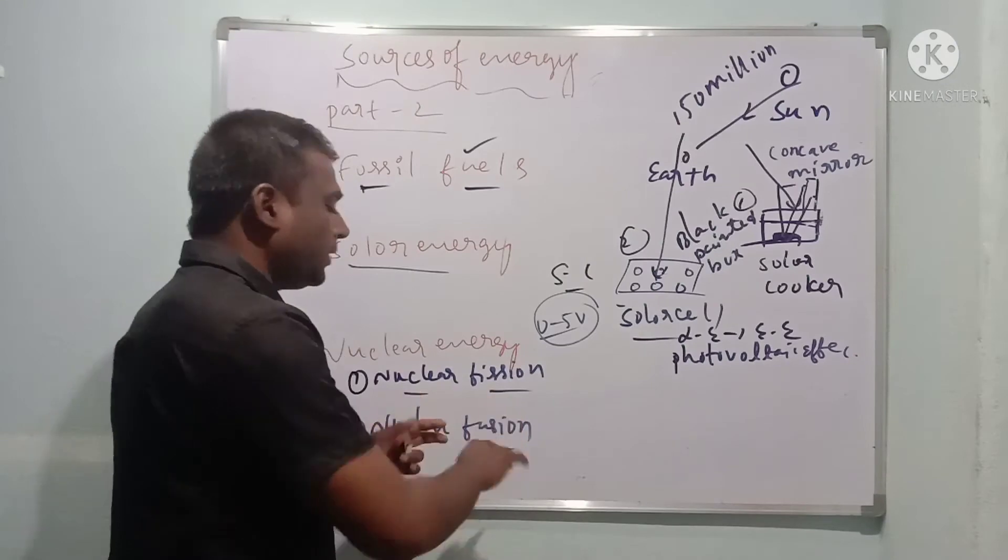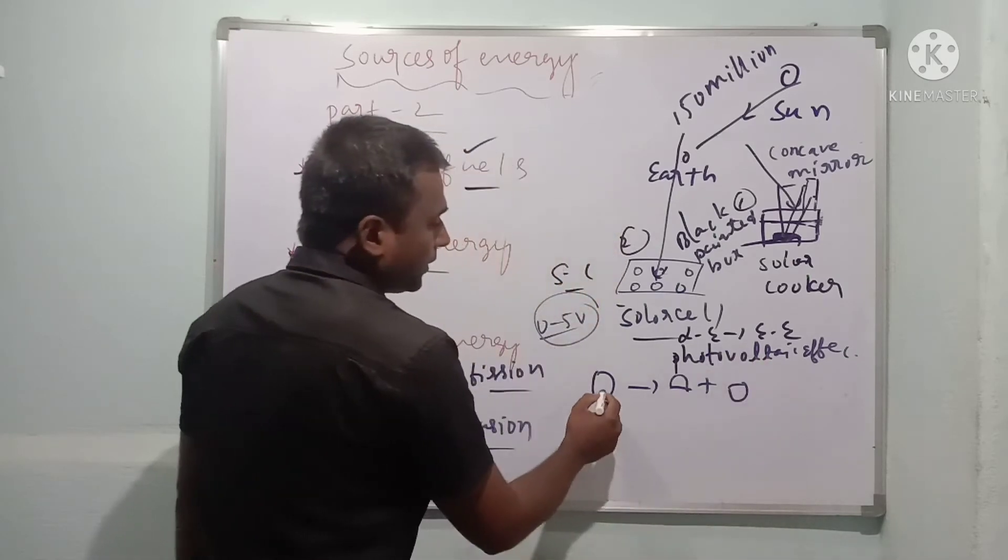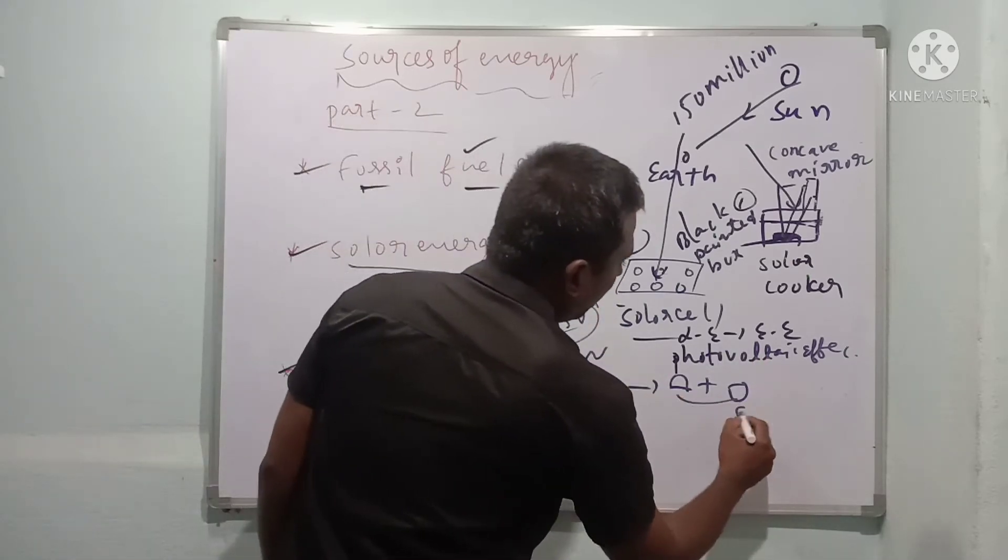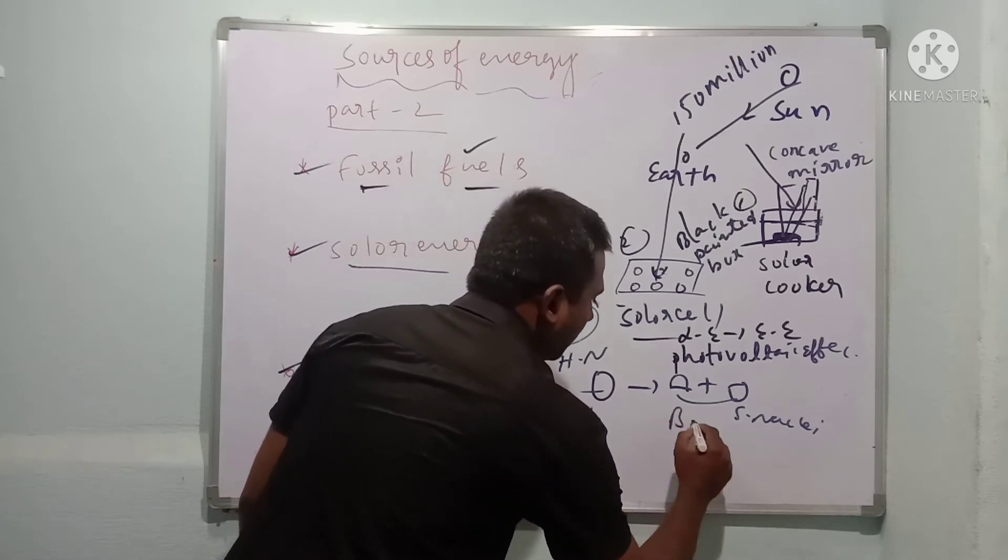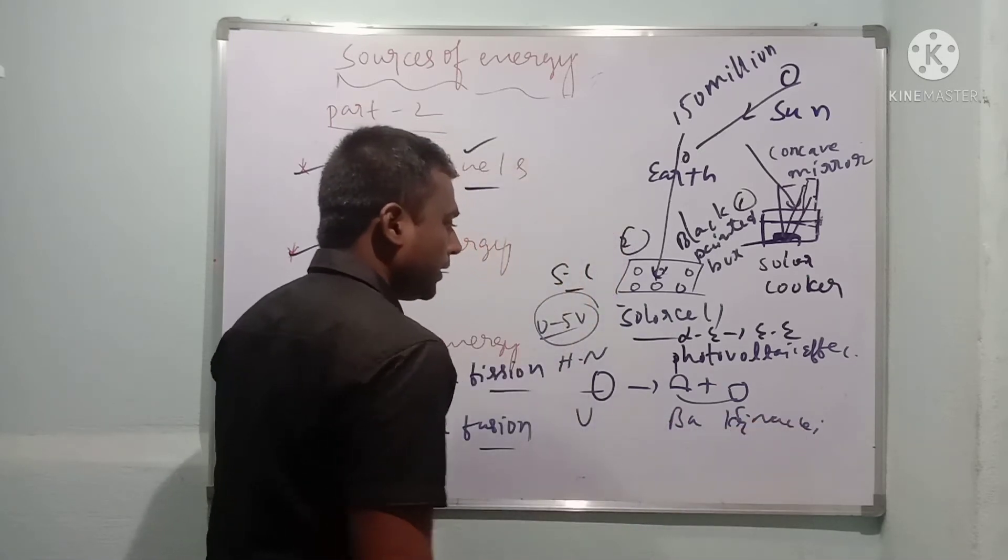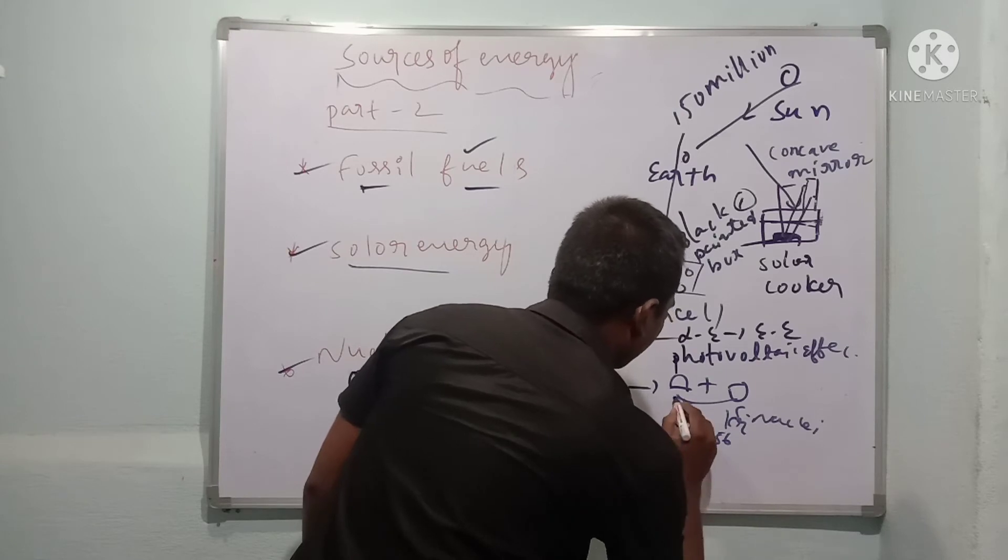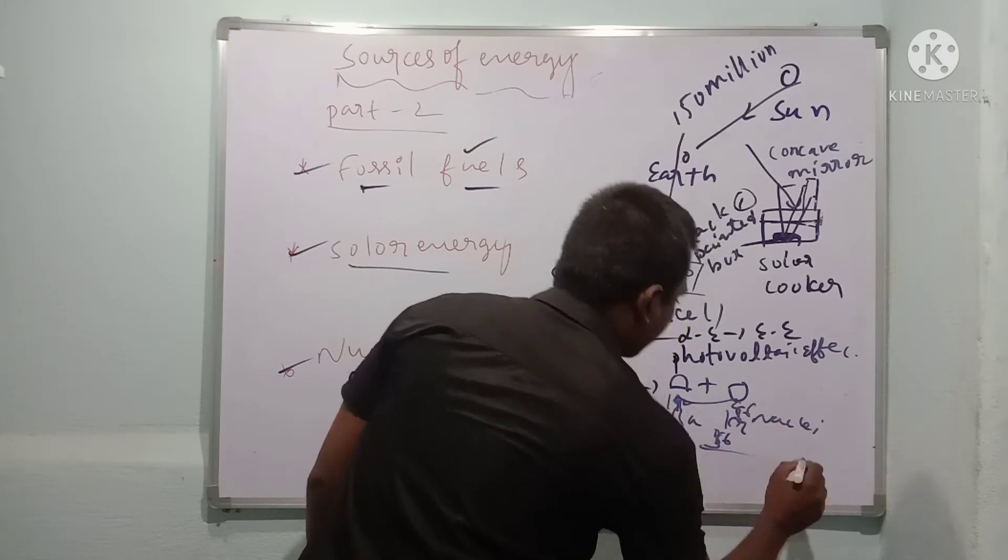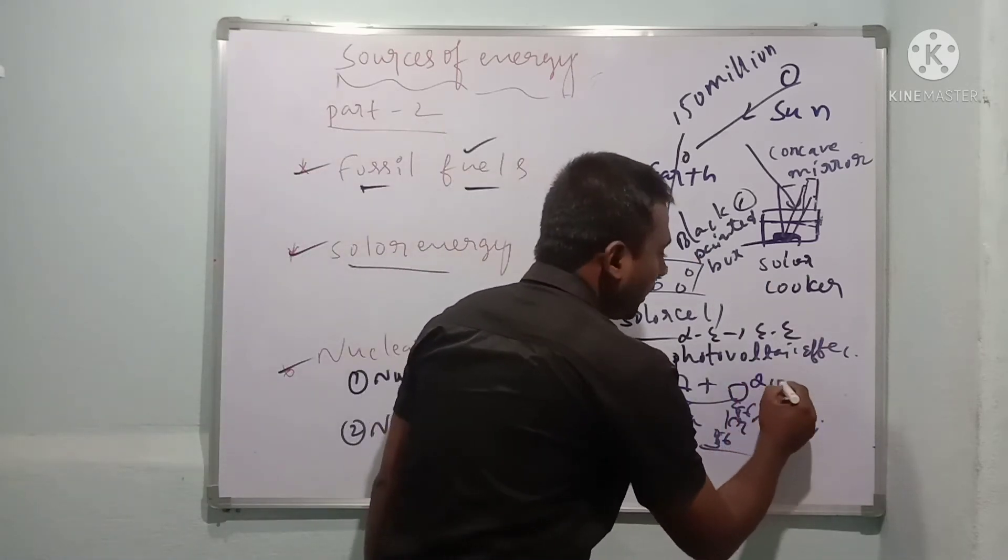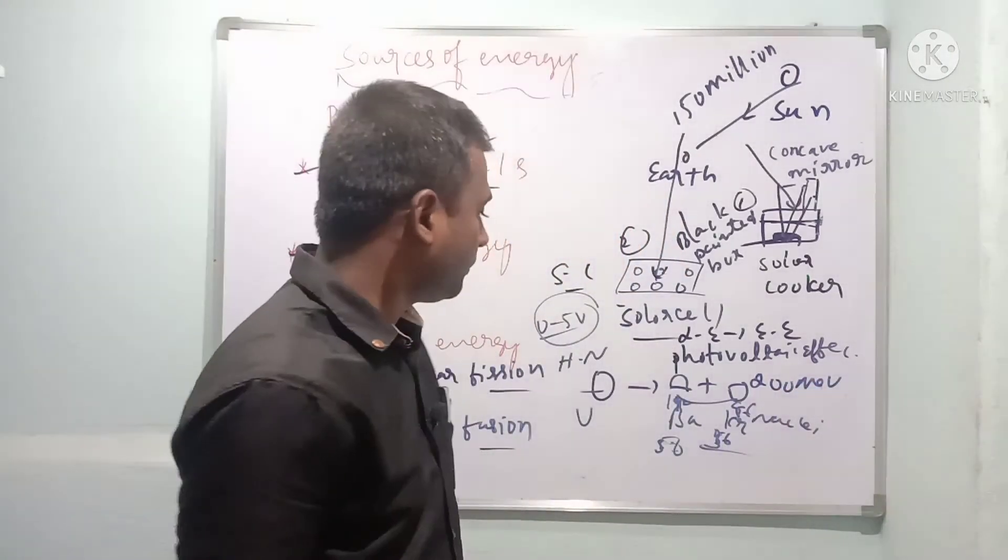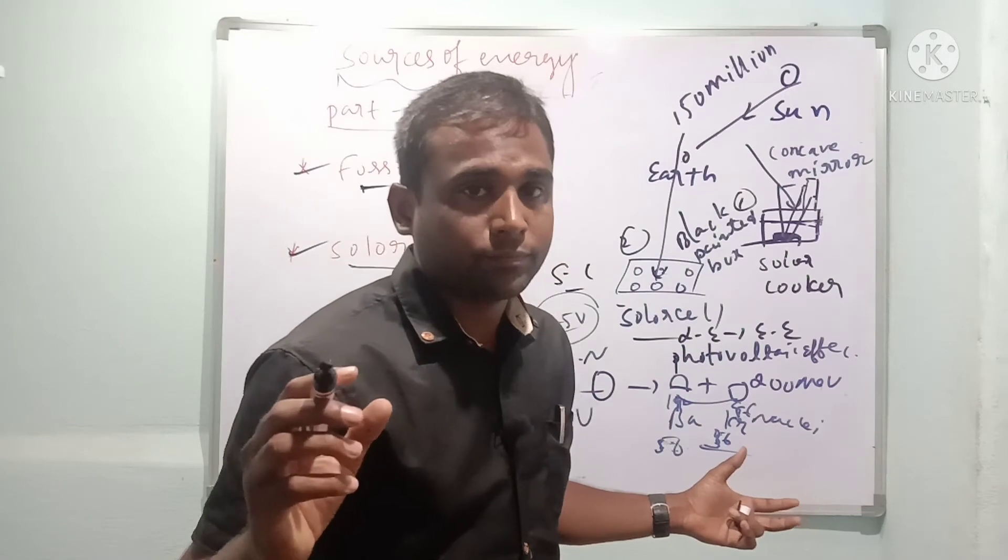That energy is produced in two ways - nuclear fission and nuclear fusion. Nuclear means nucleus. Fission means splitting. Here every nucleus will split into two small nuclei. Suppose uranium element splits into barium and krypton - 92 uranium-235 splits into barium-142 and krypton-96. This produces a large amount of energy, nearly 200 mega electron volts. This is called nuclear fission process and is the principle of nuclear bomb.